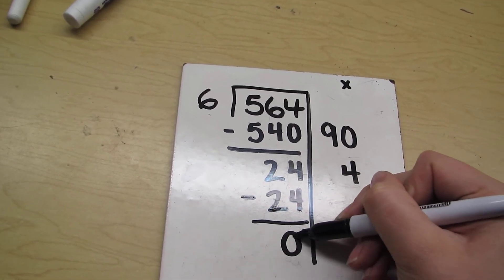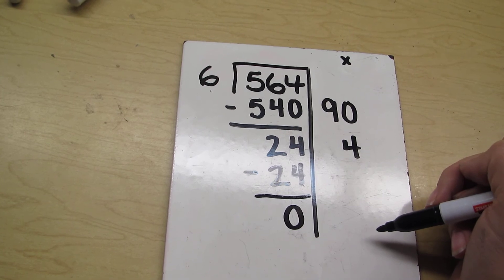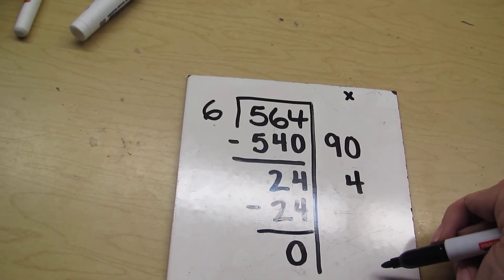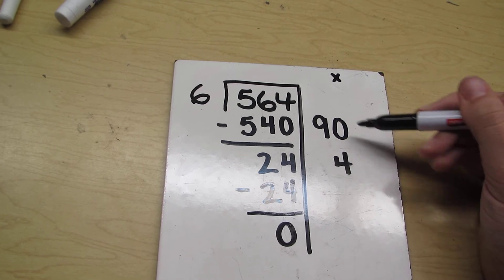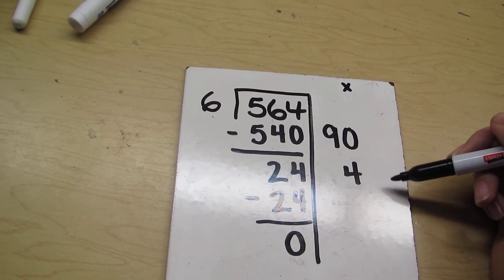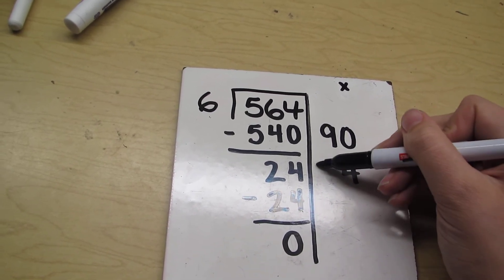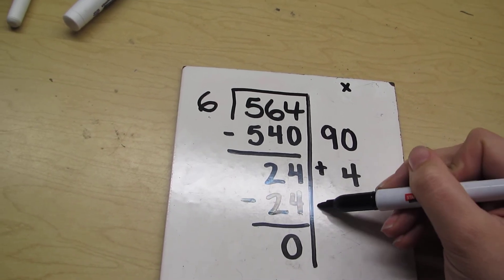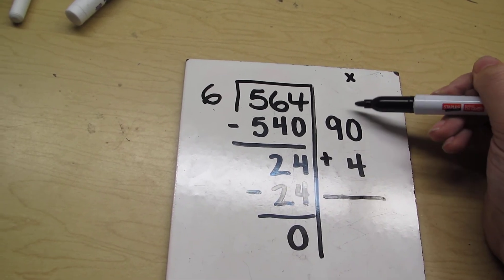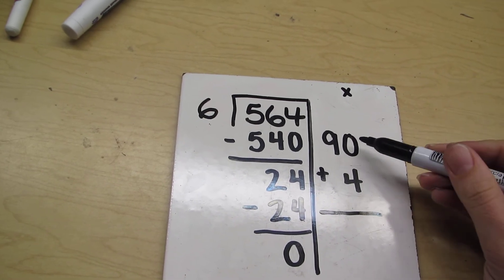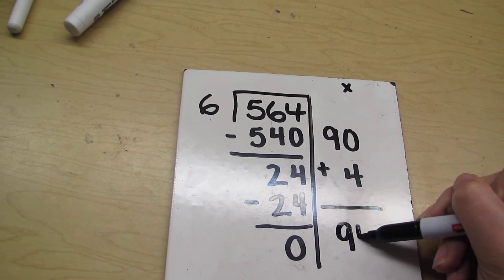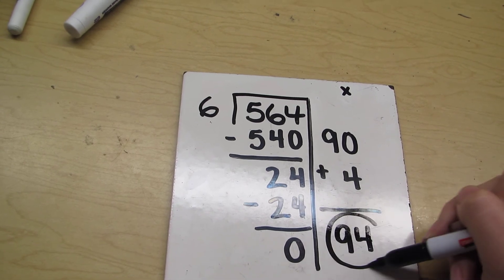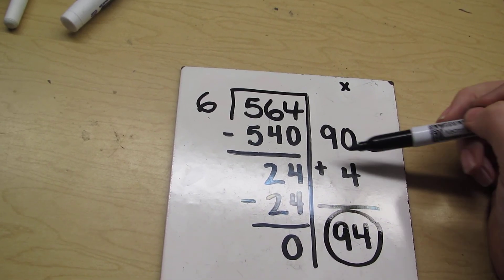In this particular case I have no remainders, but I'm not quite done. Here is where my answer is going to be. I've got to do some more math and I'm going to add these numbers that are left over. Notice I made sure that my ones are lined up and my tens are lined up. So 90 plus 4 is 94, and there is your answer.